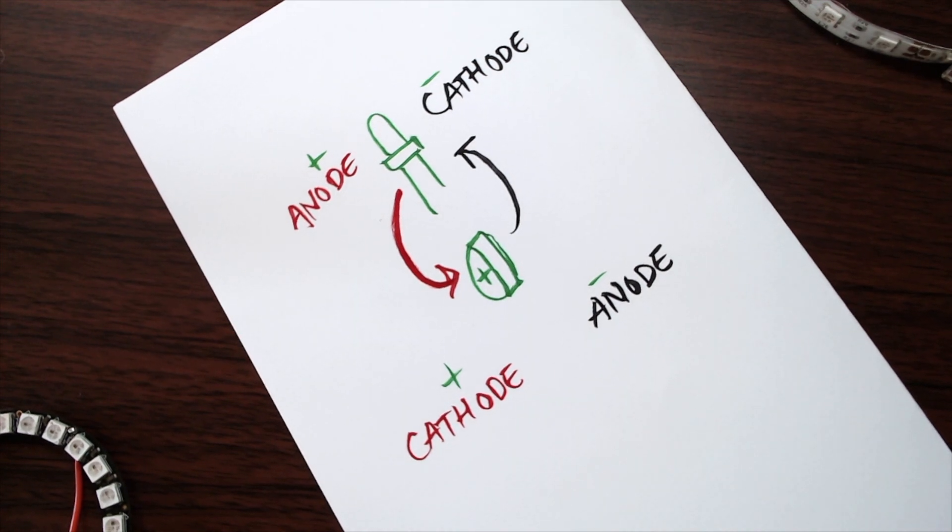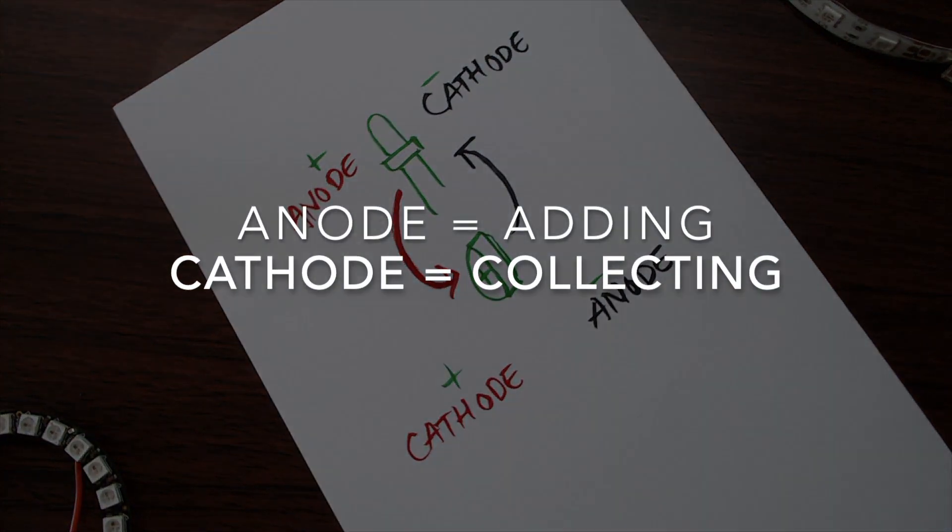In each of these cases, the anode is adding electrons into the system and the cathode is collecting them.